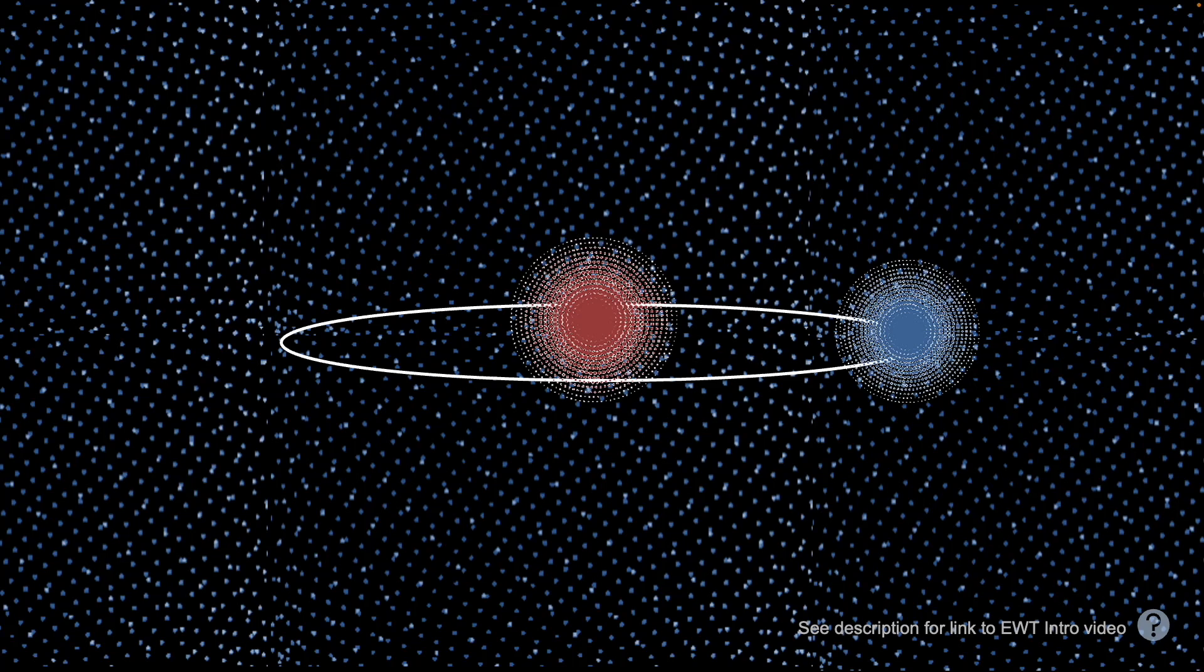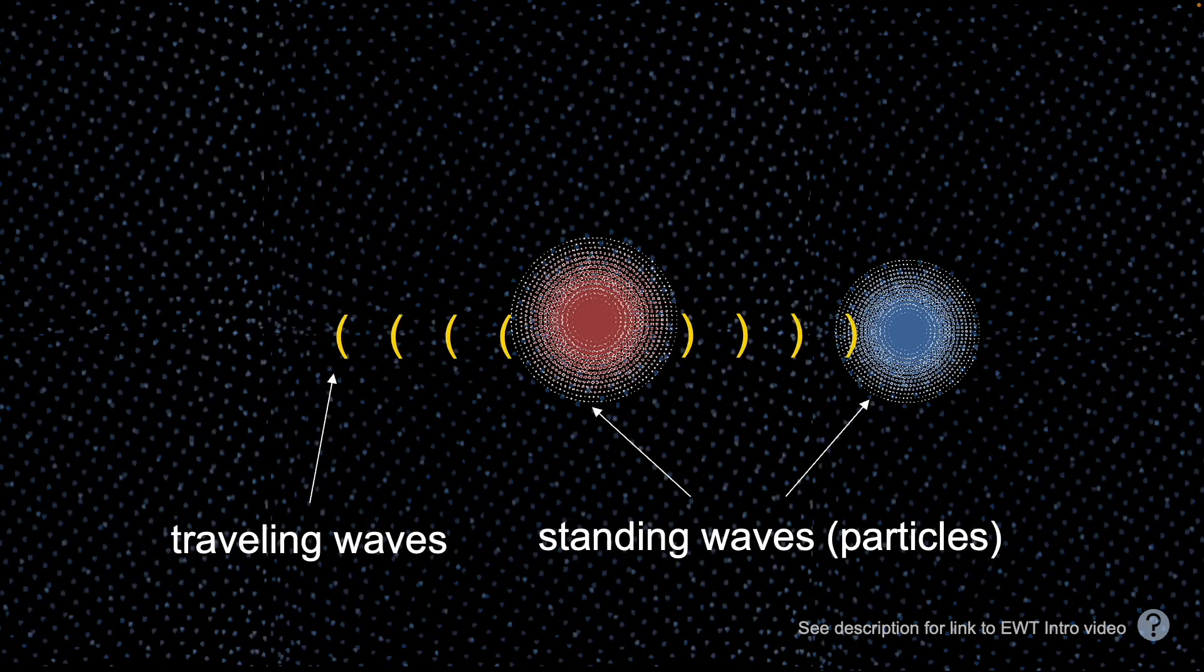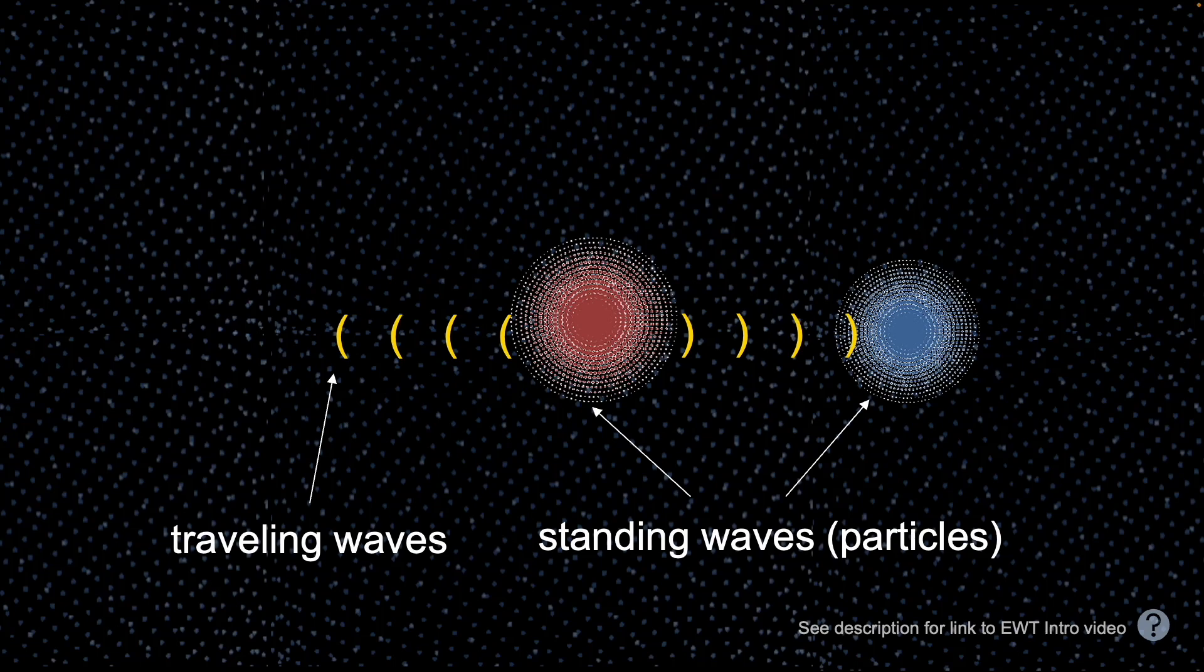Now here we have that proton and electron are described here as just waves and a very special type of wave, a standing wave. And that's what EWT refers to as particles. And for more information, go to a link in the description. I'm not going to get into detail here about particles.